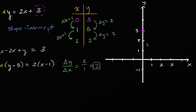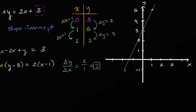Let's graph this to make sure we understand it. When x equals one, y is equal to five — so that's y equals four and y equals five. When x is one, y is equal to five. So that's that point right over there. You only need two points to define a line. Our line is going to look something like this. This is the line y is equal to two x plus three.